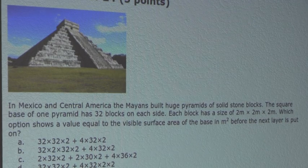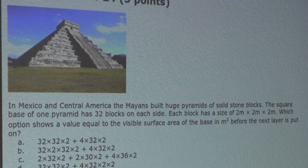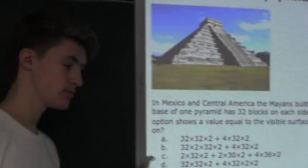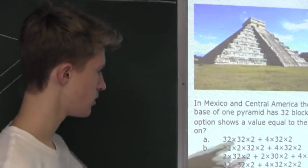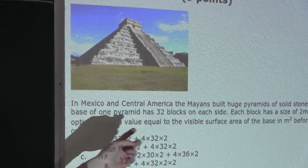Which option shows a value equal to the visible surface area of the base in meters squared before the next layer is put on? Now from the question we know they just want the visible surface area of the base before the next layer is put on.